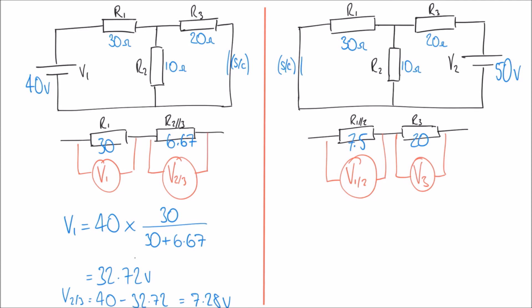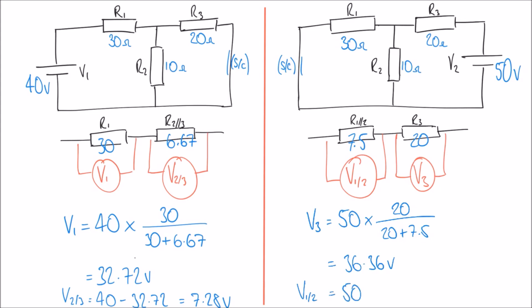Now doing the same on the right hand side: V3 is measured across the 20 ohm resistor in series with 7.5 ohms. So V3 = 50 × 20 / (20 + 7.5) = 36.36 volts. And again, V1/2 = 50 − 36.36 = 13.64 volts.